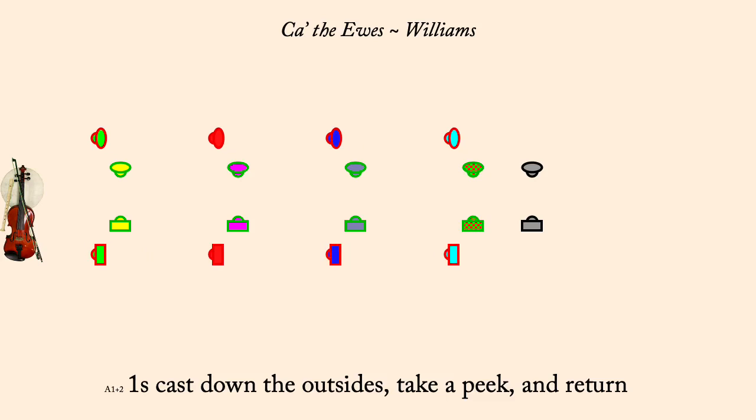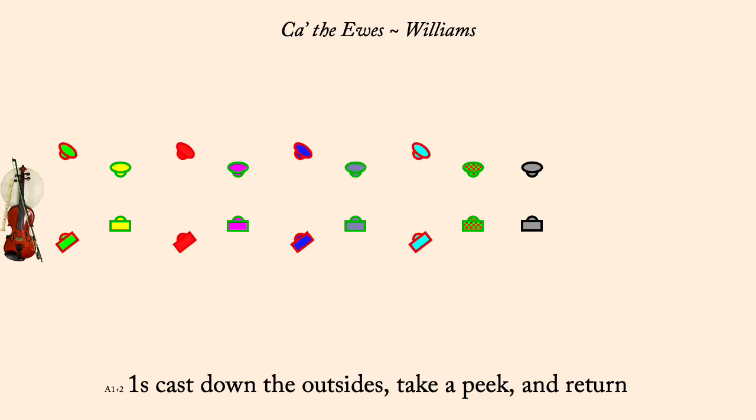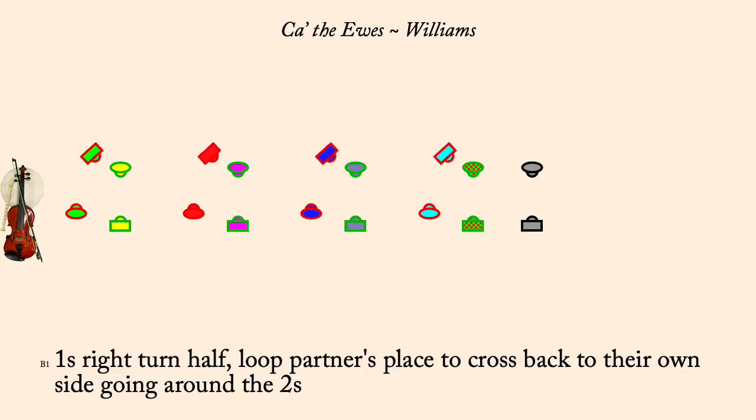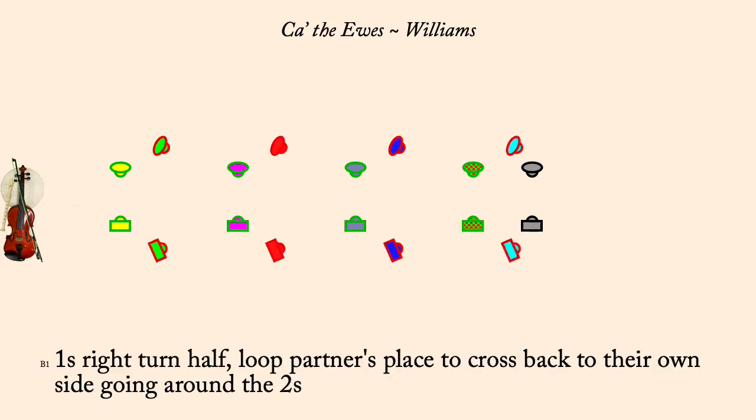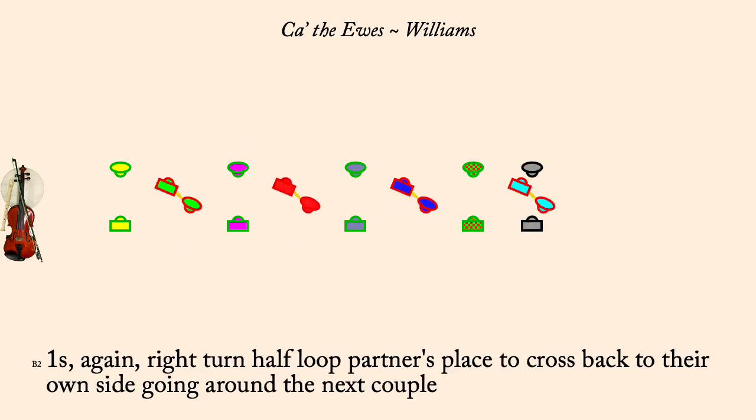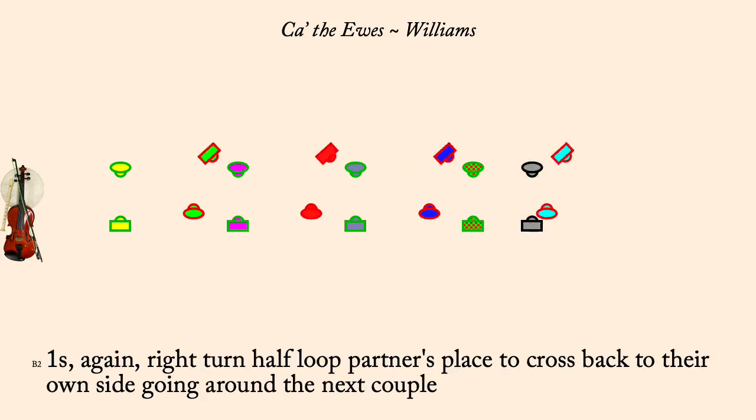One's right, turn half, loop partners, place, cross, loop, couple below. Again, one's right, turn half, loop, cross, loop, couple below.